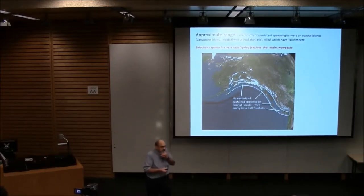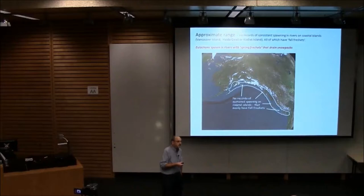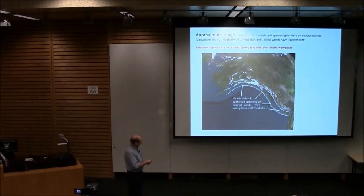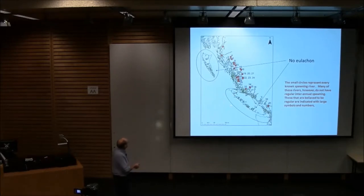The puzzle for me is that eulachons have been around for millions of years and we've had successive glaciations. How do these little fish survive during this time? Maybe they have some survival repertoire that we don't know about. If you look for where eulachons are, I've already said they're not on these islands. These are the main rivers. The red dots indicate rivers where eulachons seem to have a bigger presence and probably spawn annually.